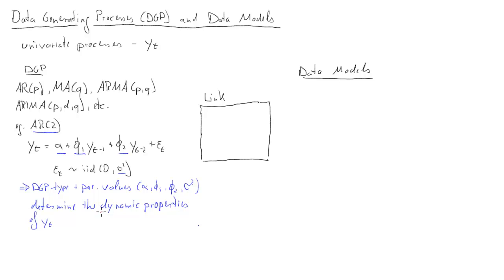The next question is then, how do we actually capture these dynamic properties? Or how do we measure them? How do we describe these? It turns out what we will mainly use is what is called the autocorrelation function or short ACF.